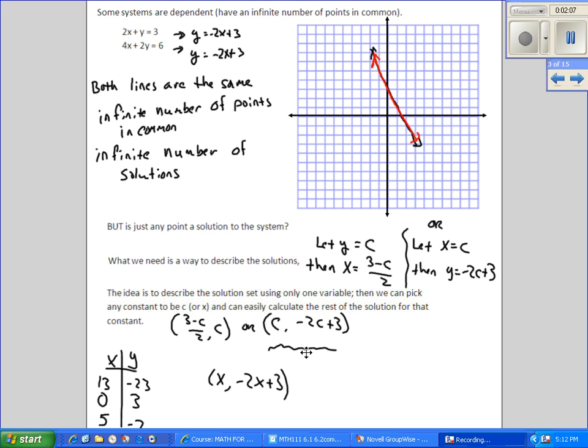So this c notation bugs a lot of students. If you just want to say the solution is x, and then describe y in terms of x, that's okay. It means exactly the same thing as describing it in terms of c. And then if we've got a series of values, we could pick x, an arbitrary x, calculate the y in terms of that value of x.